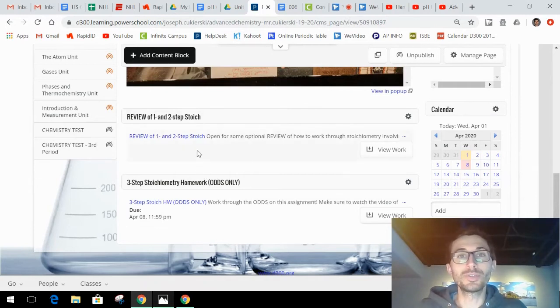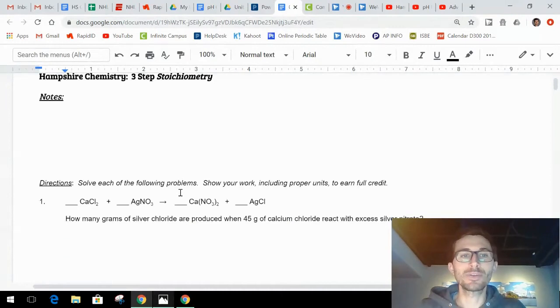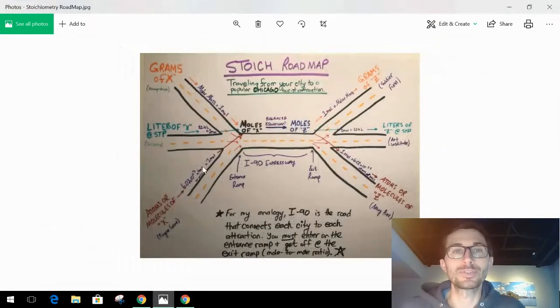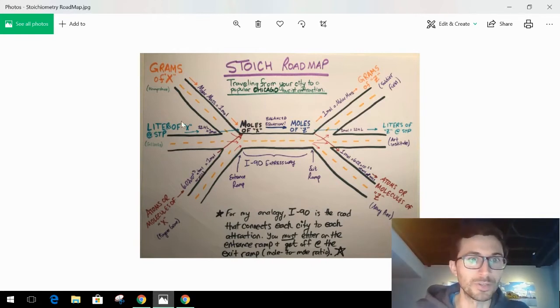Alright, so you're only doing the odds. There's 16 total. I'm gonna go through a couple evens with you. Be sure to have this out. Make sure you have at least what one mole equals. I have all that on here. You can see one mole is the molar mass, one mole is 22.4 liters, and one mole is 6.02 times 10 to the 23rd atoms or molecules. You'll need these.